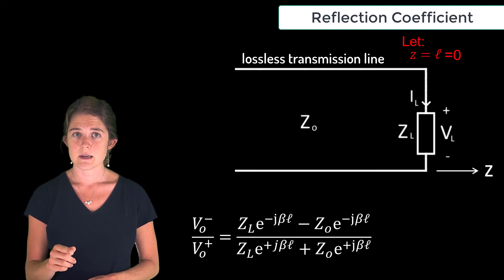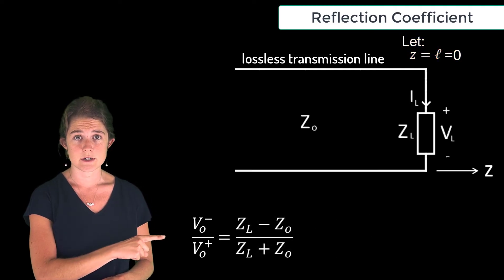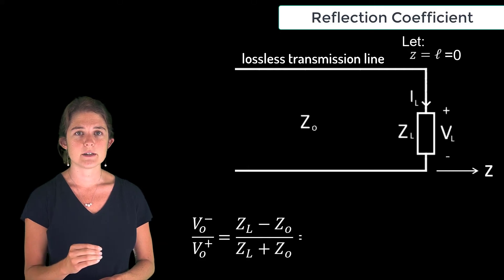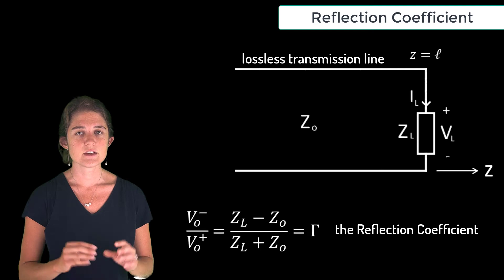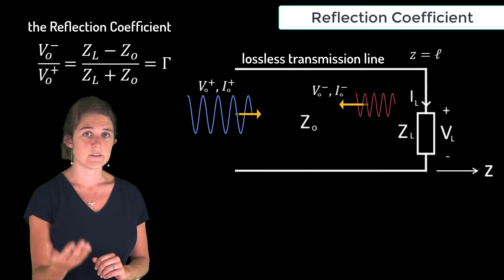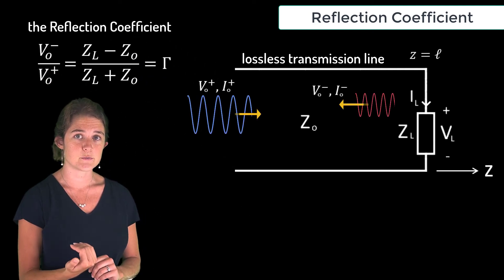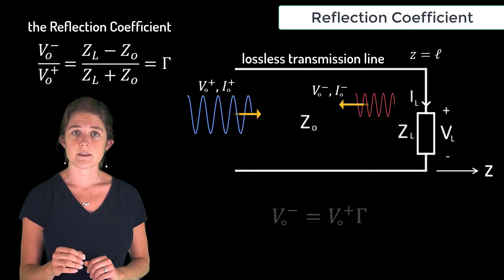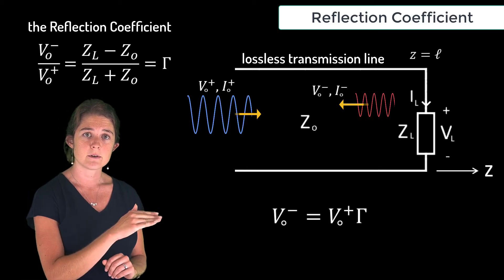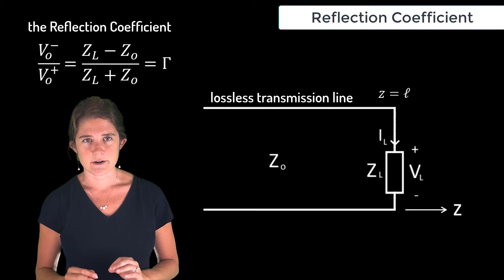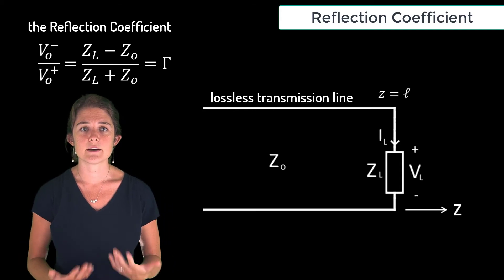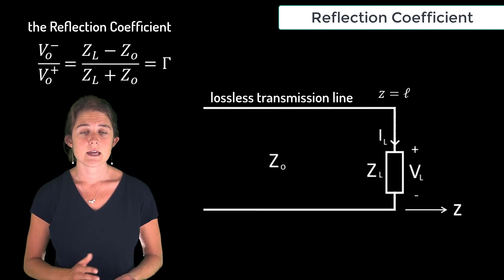this simplifies to this equation, which we will use as the definition for capital gamma, the reflection coefficient. So if you wish to calculate the magnitude of the reflected voltage wave, you can just multiply the magnitude of the input voltage wave by gamma.